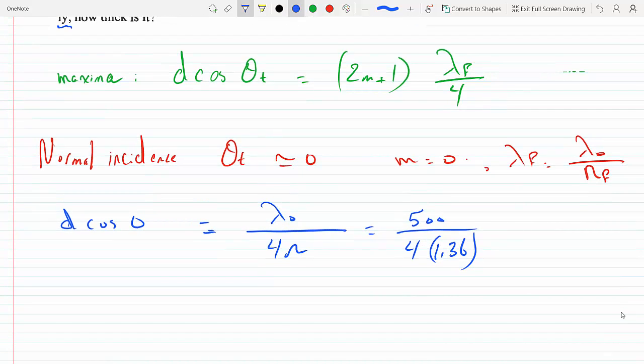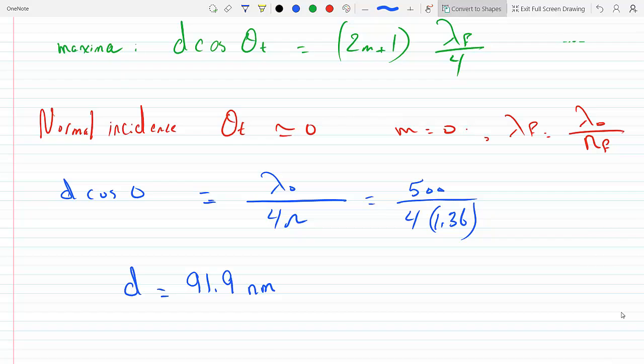So we get d, the thickness, equal to, plugging this in the calculator, 91.9 nanometers. This would be the thickness of the film.